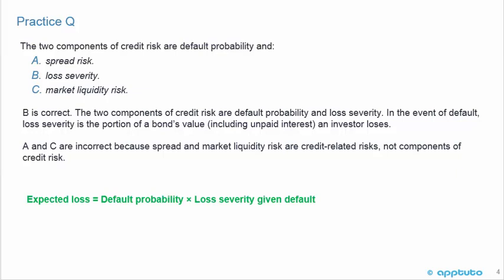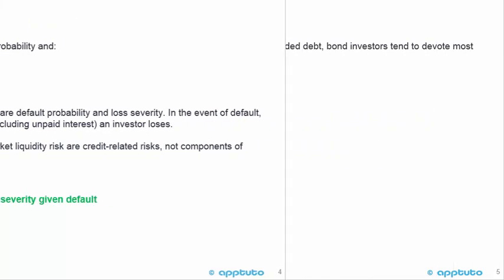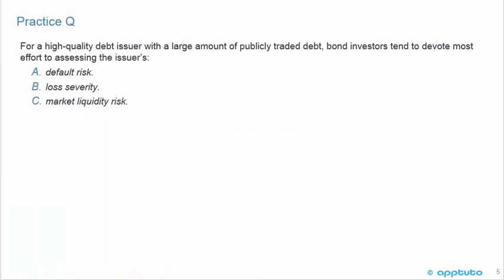In the event of default, loss severity is the portion of the bond's value, including unpaid interest, an investor loses. A and C are incorrect because spread and market liquidity risk are credit-related risks, not components of credit risk. You need to understand the two components of credit risk are default probability and loss severity. And one last practice question to finish this LOS.